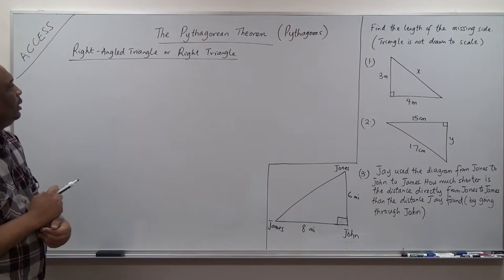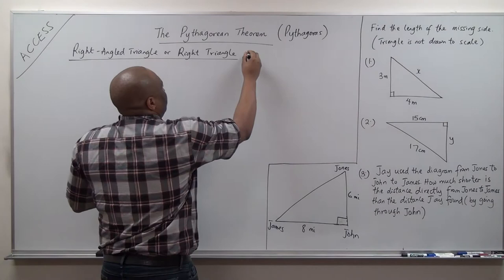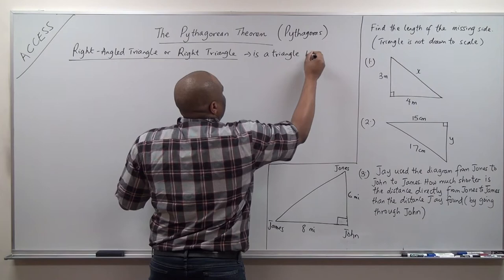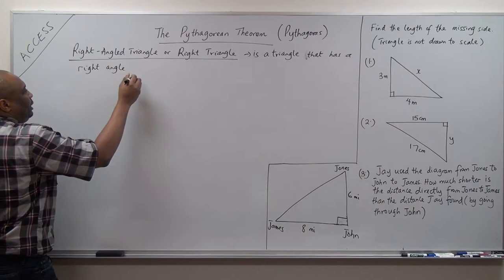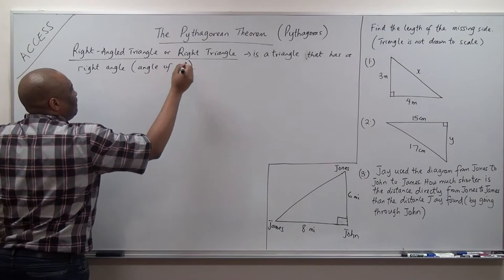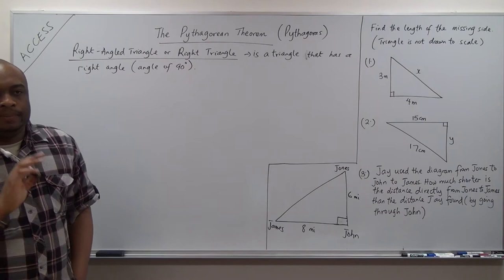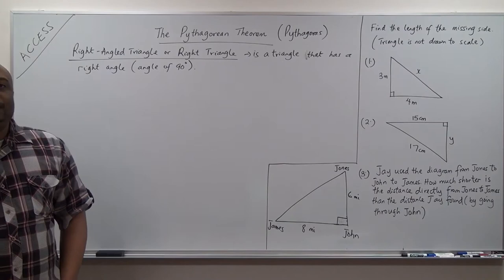What is a right triangle? A right triangle is a triangle that has a right angle — an angle of 90 degrees. So if any triangle has one right angle, that means that triangle is a right triangle, or a right angle triangle.